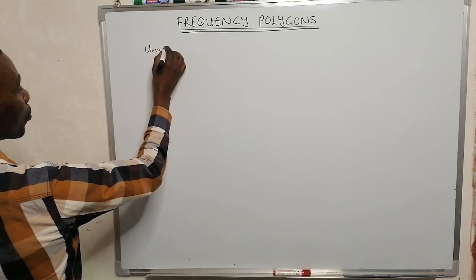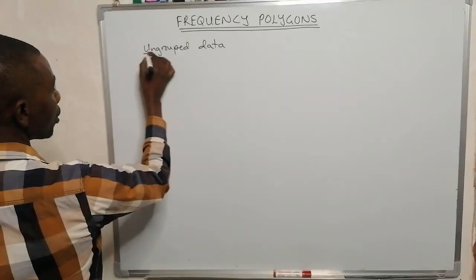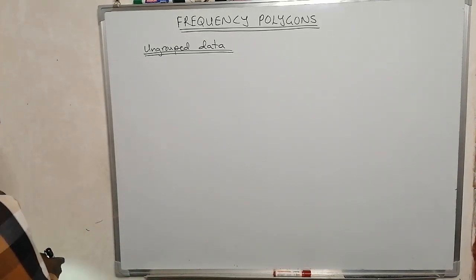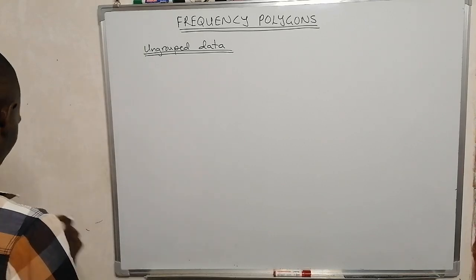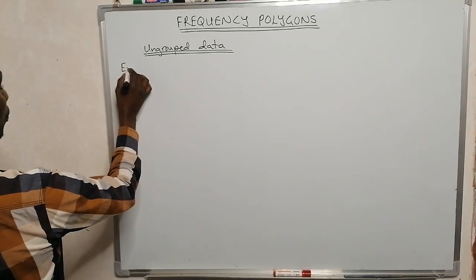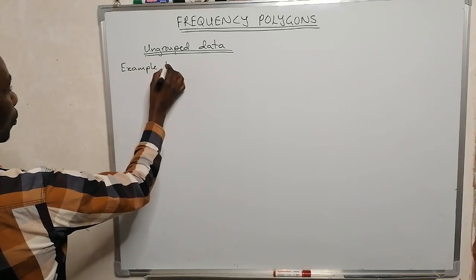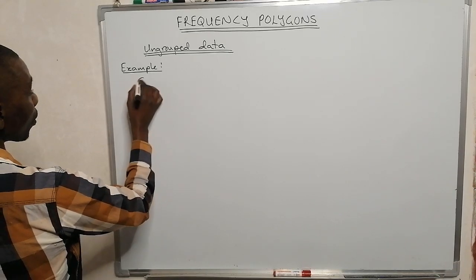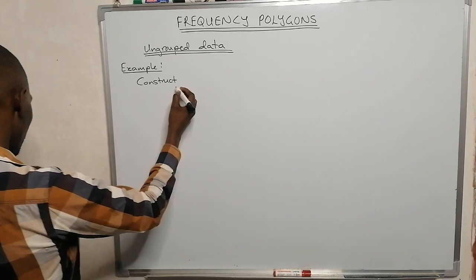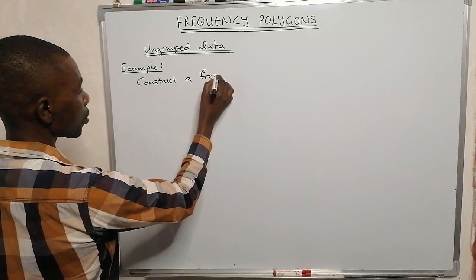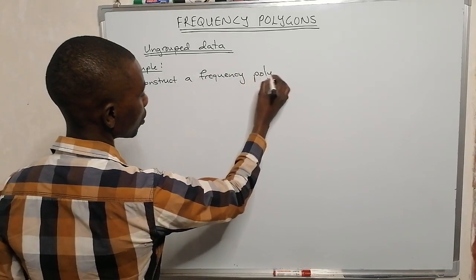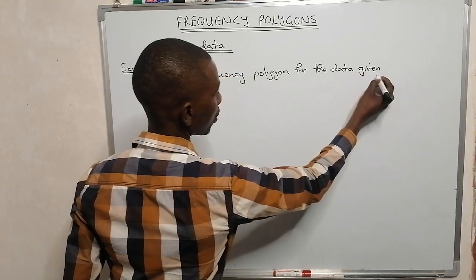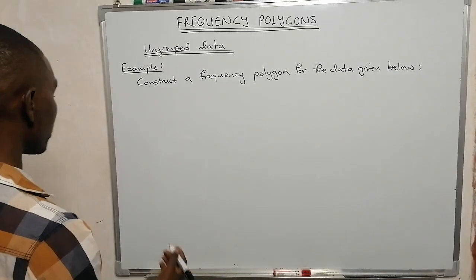For ungrouped data, let's take an example: construct a frequency polygon for the data given below. The data is given as follows.